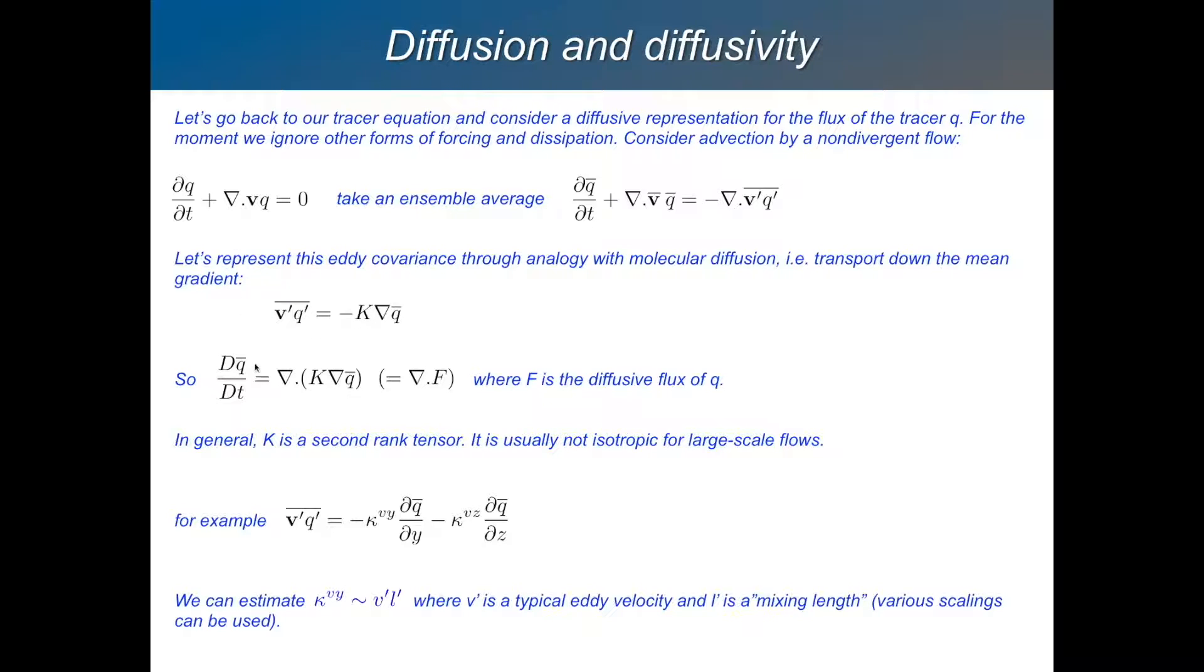We've got an equation. So here's the substantial derivative of Q bar represented in terms of Q bar, where this is our assumption for how the transients are going to behave. It's a parameterization or a closure.